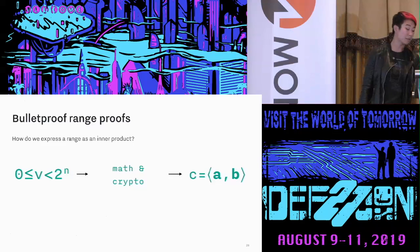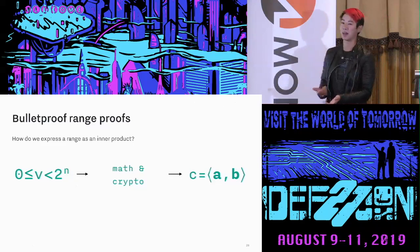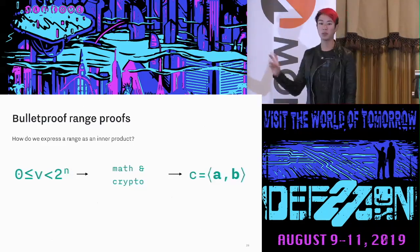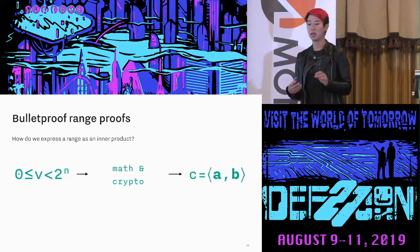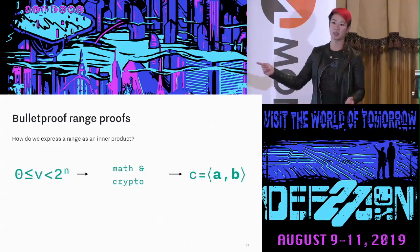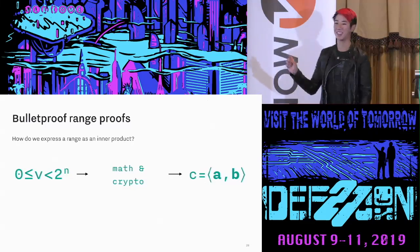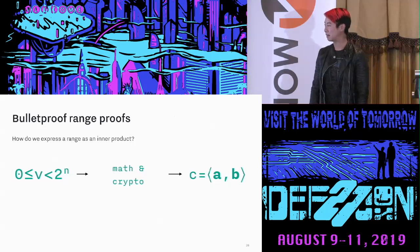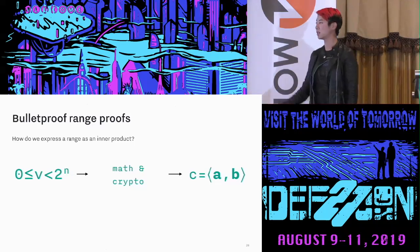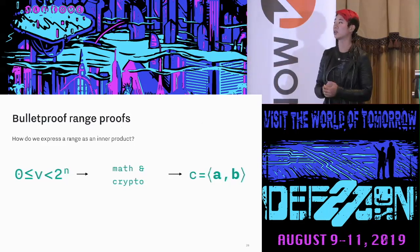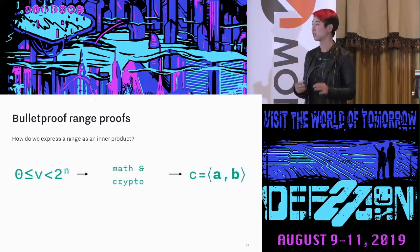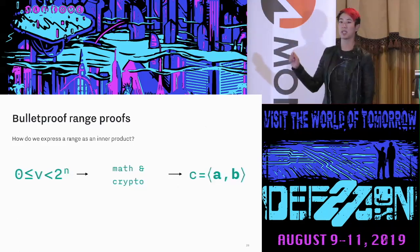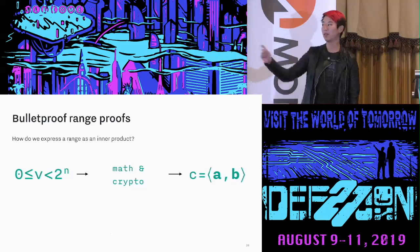We just covered the inner product building block. You might wonder why we care — why does it matter that C is the inner product of A and B? The reason it's actually really cool is that by applying math and cryptography, we can represent effectively any statement as an inner product. I'll show you with this range proof, and also with our generalized constraint system proof. Our goal: start with a range statement, do some things to it, until it's in the form C equals the inner product of A and B, such that if C is the inner product, then with very high probability V is in range.